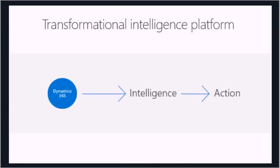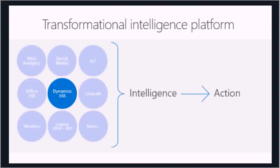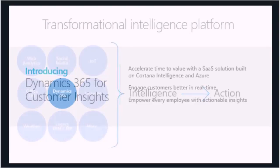This intelligence platform is really about taking not just Dynamics 365 data, but also all sorts of other data — IoT, social, the LinkedIn acquisition, which was somewhere between $22 and $26 billion, and it's the biggest professional graph in the world. Taking Office 365 data, weather data, and so on — trying to figure out a little bit of intelligence around that and then drive that to action. That action is really valuable to your customers and yourselves, and that's really the focus of what we're trying to figure out.